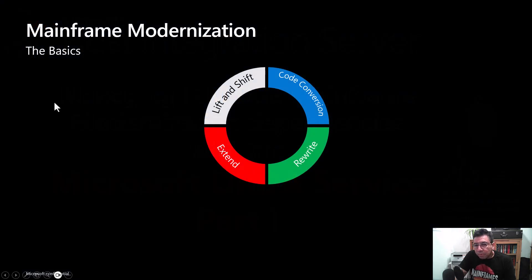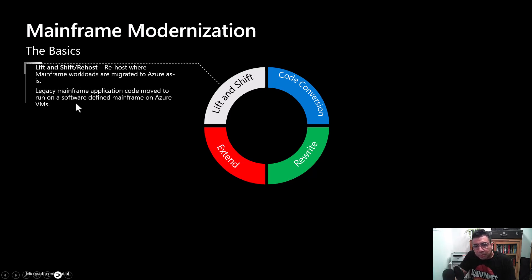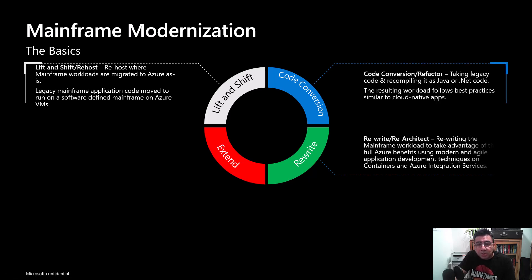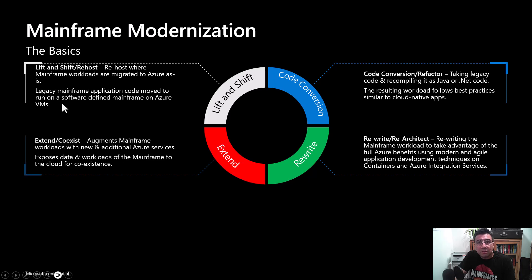Mainframe modernization has multiple phases and approaches. We can do lift and shift, we can do code conversion or refactoring, we can rewrite applications, or we can decide to coexist or extend our workloads.